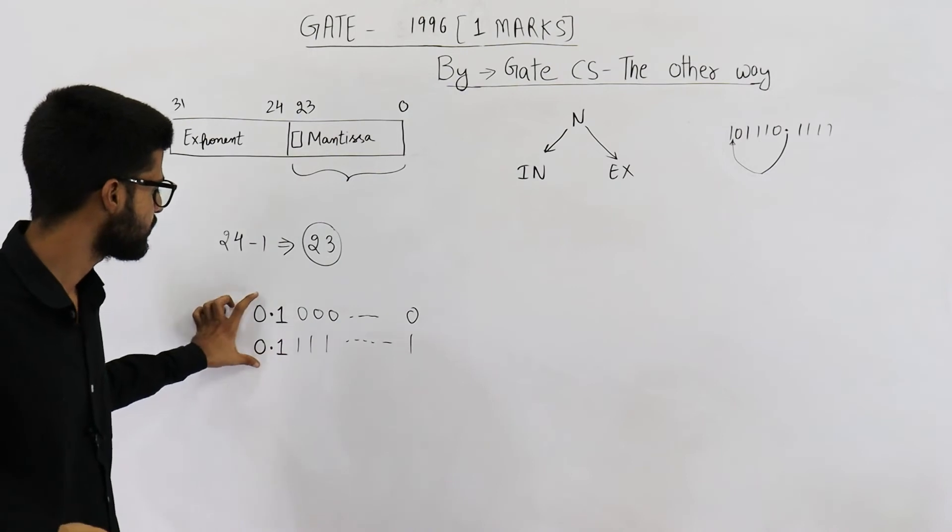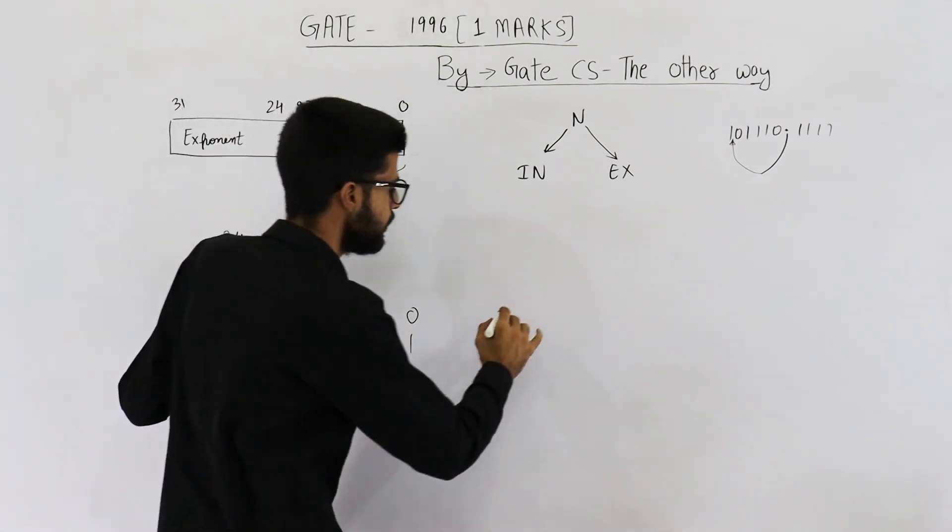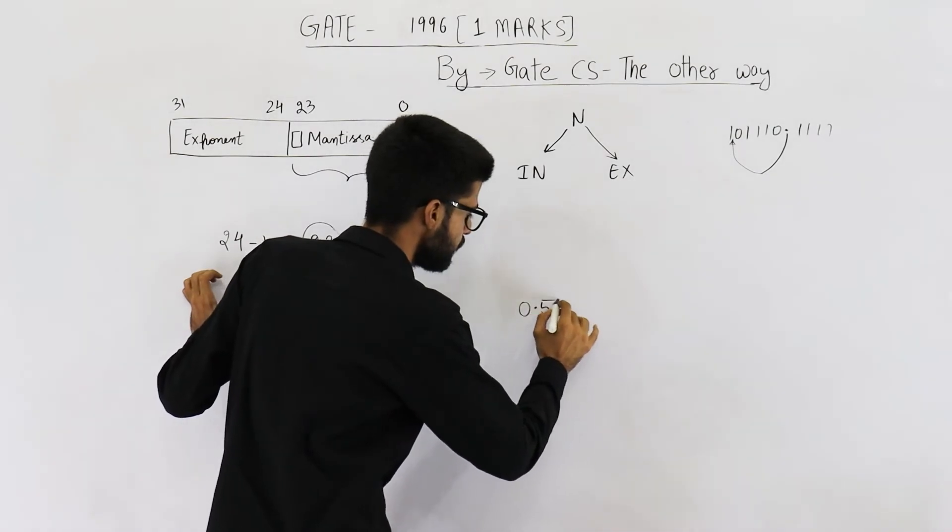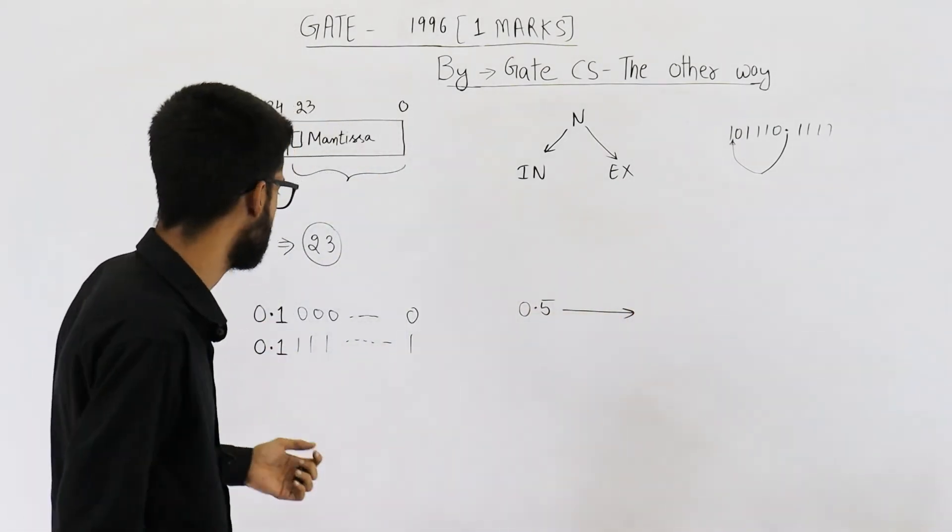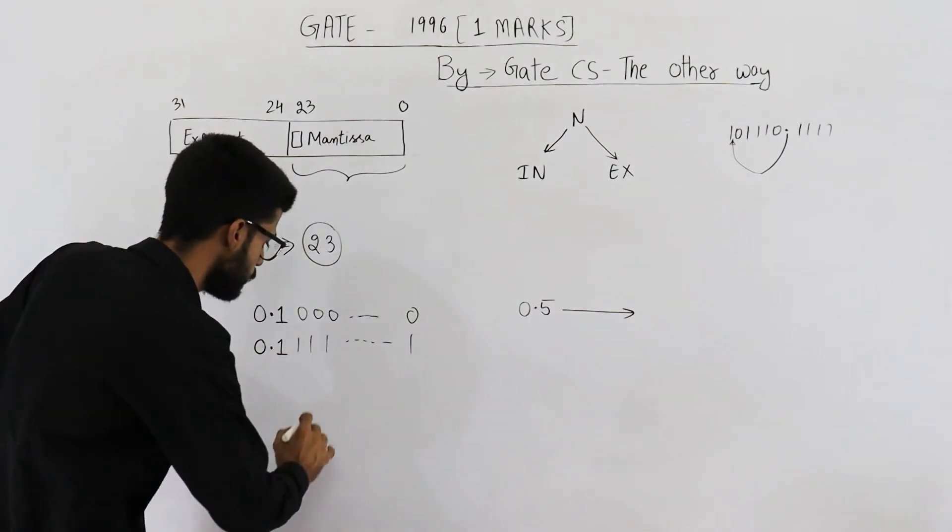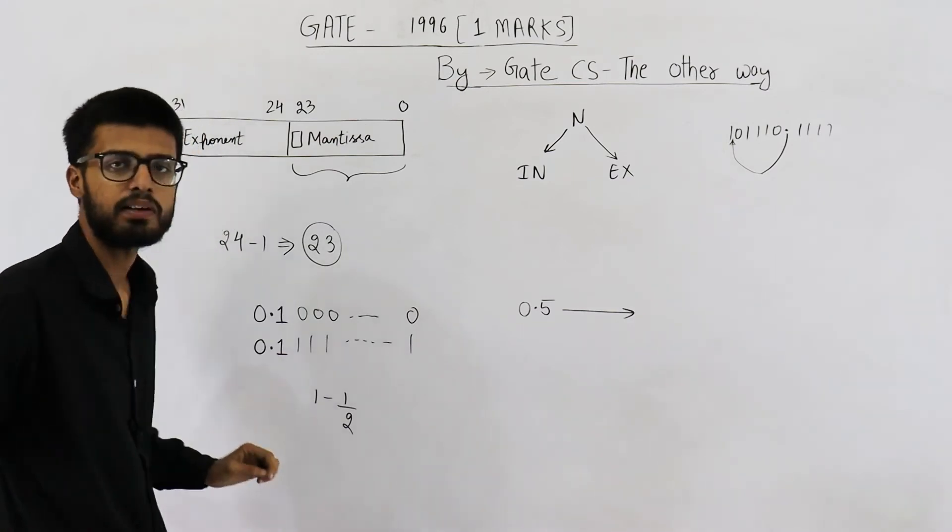Now, let's just convert this range into decimal. 0.1 in decimal means 0.5. So, smallest number that you can represent is 0.5. What is the largest number? Convert it to decimal, you are going to get 1 minus 1 upon 2 raised to the power n.